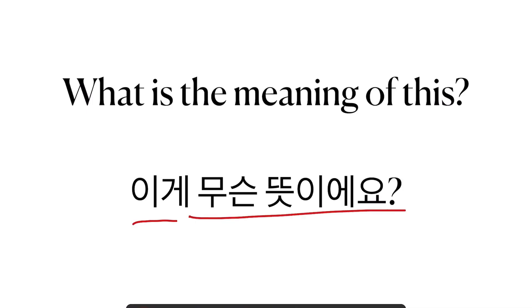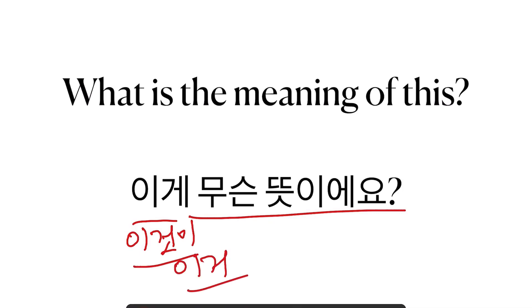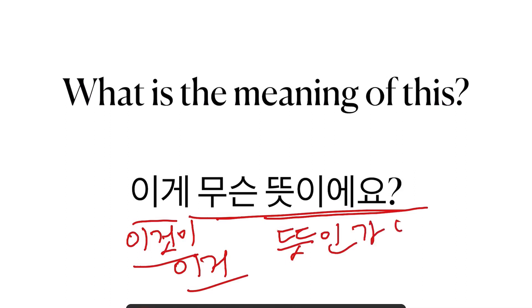이게 라고 하면 이것이라는 뜻이죠 — 이것이, 이게, 아니면 이거, 다 괜찮아요. 무슨 뜻이에요? 무슨 뜻인가요? 다 괜찮아요. 이게 무슨 뜻인가요?